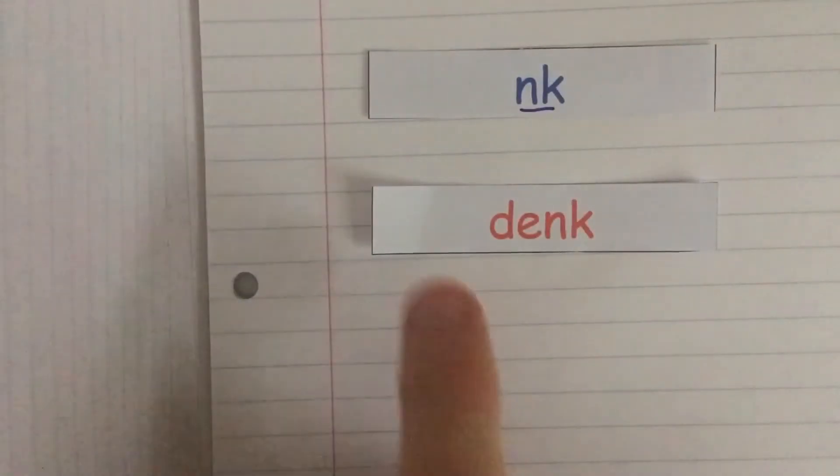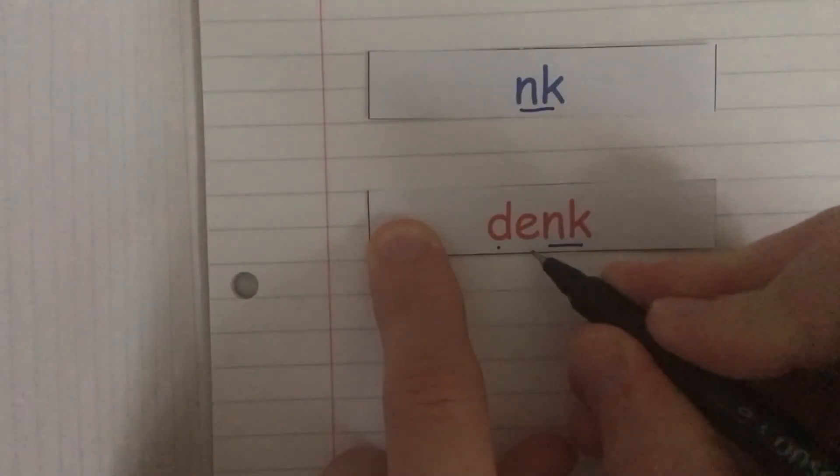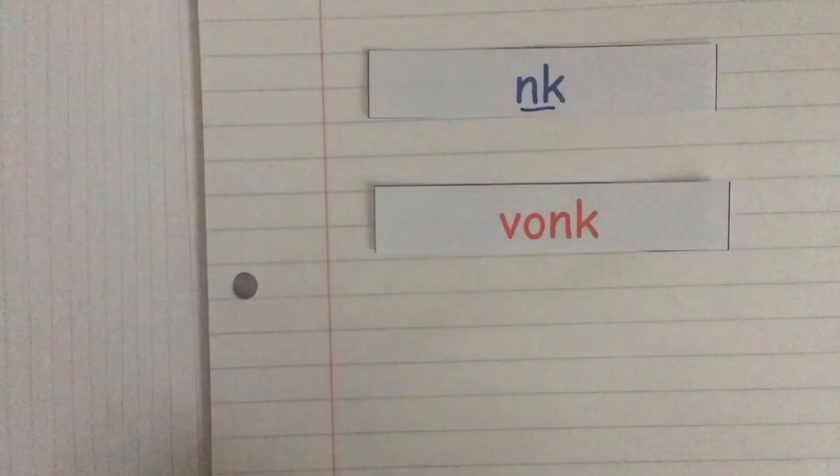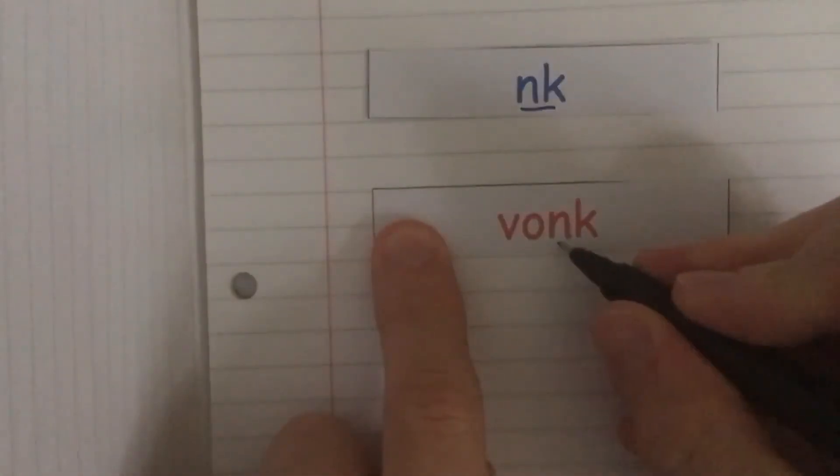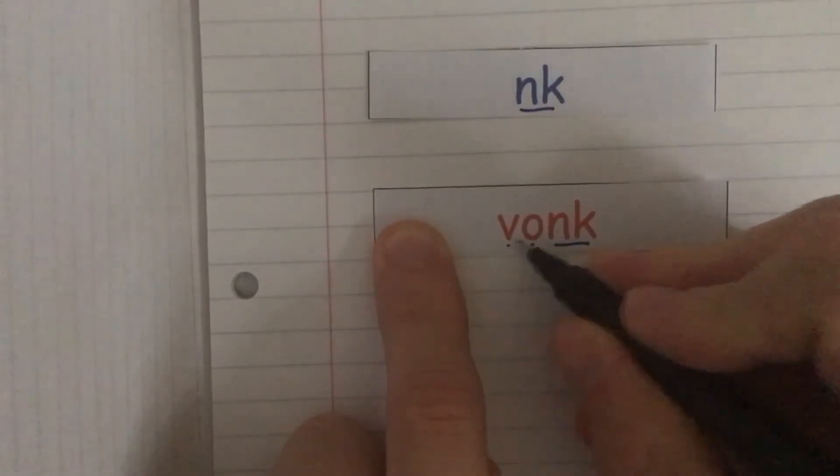Special friends nk. Fred talk: d-e-nk. Denk. Special friends nk. Fred talk: v-o-nk. Vonk.